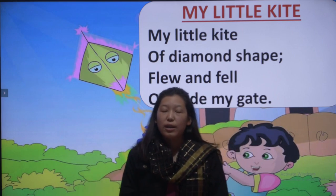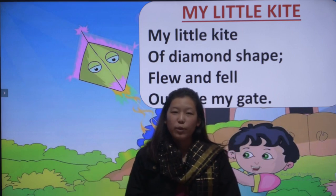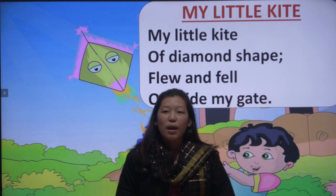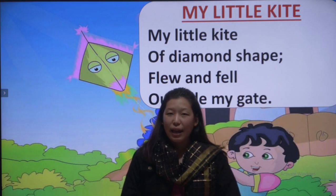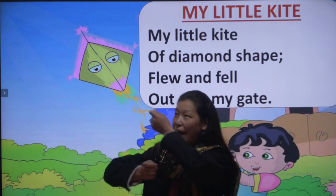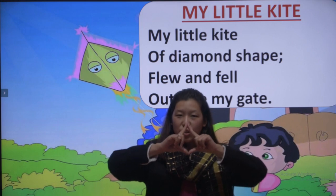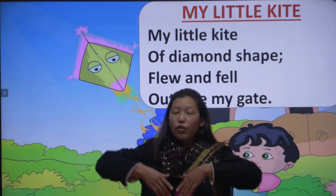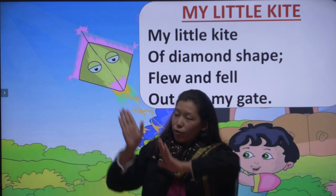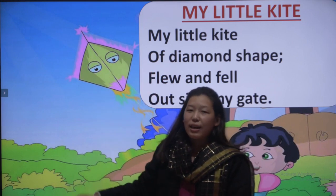Now let us repeat once more, with action. My little kite. My little kite of diamond shape flew and fell outside the gate.